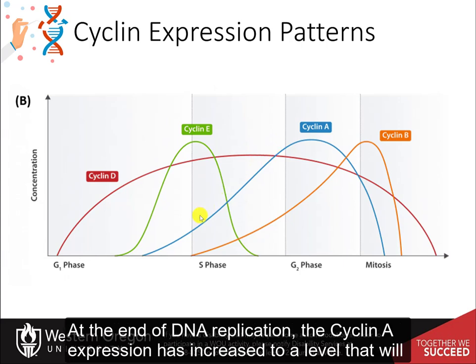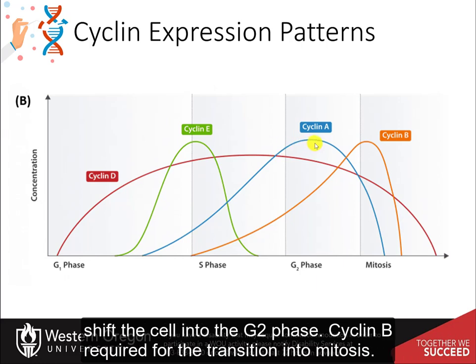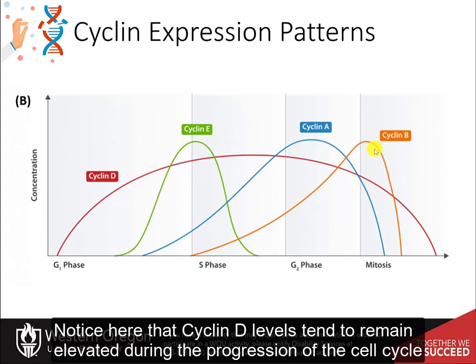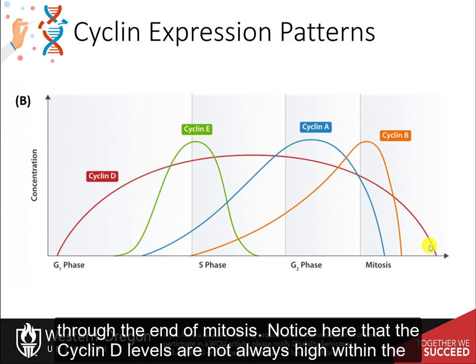At the end of DNA replication, cyclin-A expression has increased to a level that shifts the cell into G2 phase. Cyclin-B is then required for the transition into mitosis. Cyclin-D levels tend to remain elevated during the progression of the cell cycle through the end of mitosis.